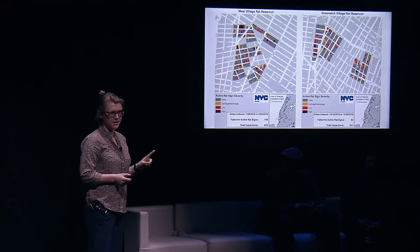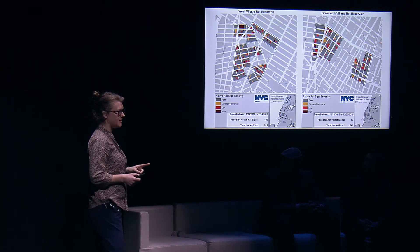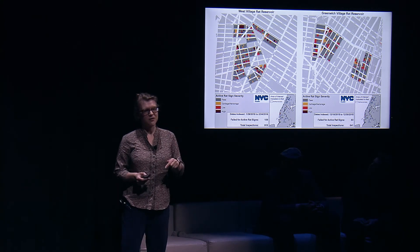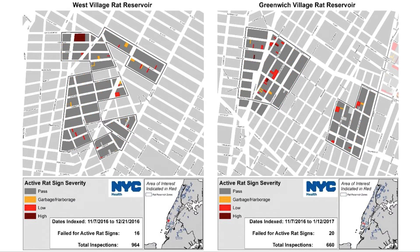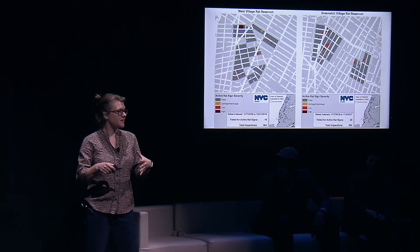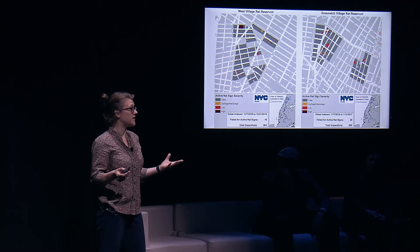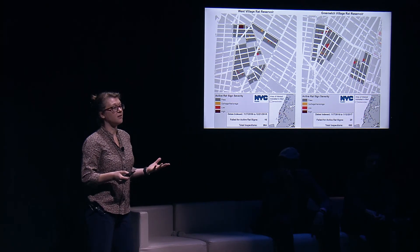I want to show you an example of how the power of humans coming together in a community can actually move the rats out. Here's a map showing orange, red, dark red — just know that means rats or the garbage that feeds them. And here's what it looks like one year later, after that organizing has occurred. All we did was assign one case manager to those neighborhoods to bring the community together to organize around rat prevention. They didn't necessarily even know they were organizing around rat prevention — they knew they were organizing around cleaning up their streets.